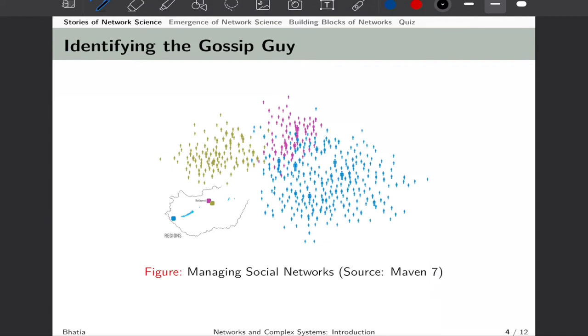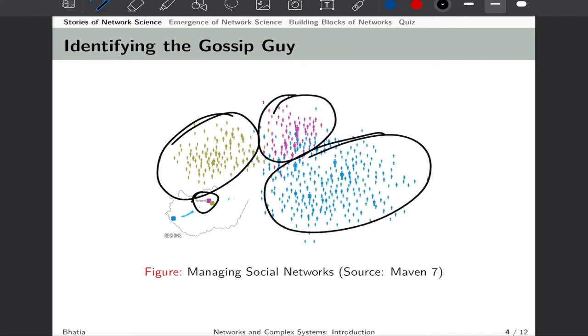This is an interesting case from a real world example. Maven 7 is a company in Hungary that solves consultancy problems using network science. This is the story of a company operating at three locations with headquarters in Budapest. Each color represents the three different locations. However, management faced a serious issue: whatever they wanted to communicate was not reaching employees, or was reaching them in a distorted form. They wanted to identify why.